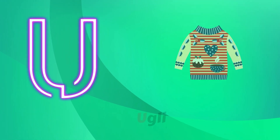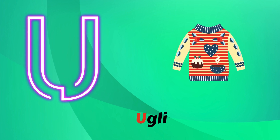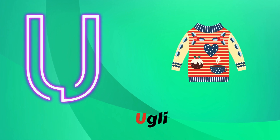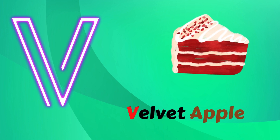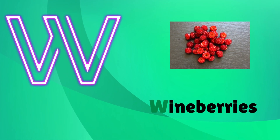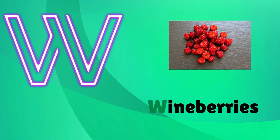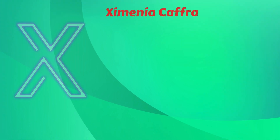U is for Ruveli. V is for Velvet Apple. V, V, Velvet Apple. W is for Wineberries. W, W, Wineberries.